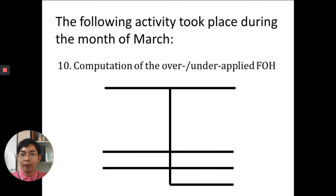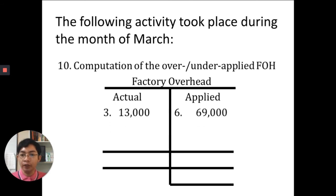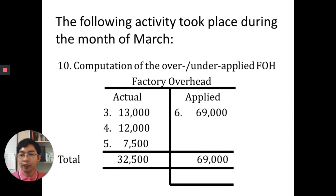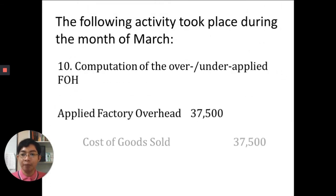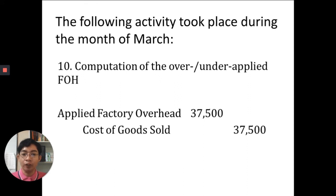Now we adjust cost of goods sold for overhead. We compute the over/under applied factory overhead — actual is on the debit side, applied is on the credit side. From our problems: indirect labor $13,000, depreciation $12,000, and utilities $7,500 gives total actual of $32,500. Applied is $69,000. The difference is $36,500 over applied. To adjust, we debit applied factory overhead and credit cost of goods sold, so the entry is debit applied factory overhead $37,500, credit cost of goods sold $37,500. At period end, applied factory overhead should be closed to zero.